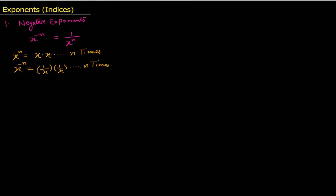When solving problems, keep this in mind: 1 multiplied by 1 multiplied by 1, n times, equals 1, and x multiplied by x in the denominator equals x raised to the power n. So x raised to the power minus n is equal to 1 divided by x raised to the power n.